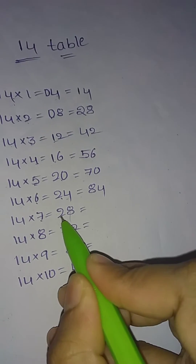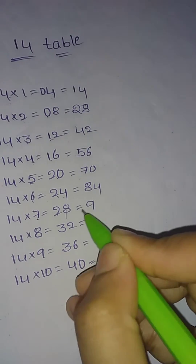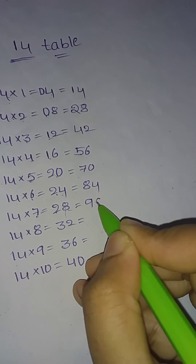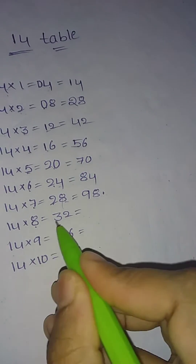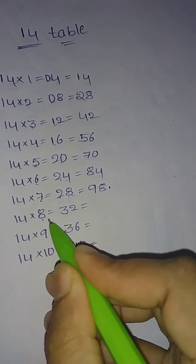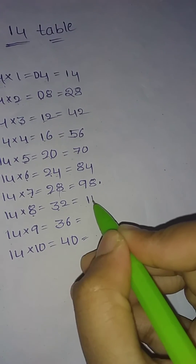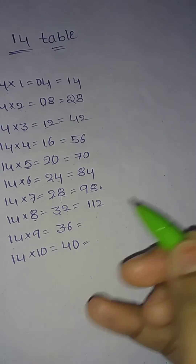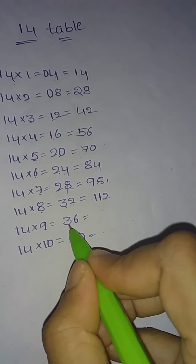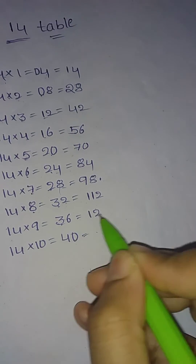Next, 7 plus 2 is 9, giving us 98. Then 8 plus 3 is 11, so we get 112. And 9 plus 3 is 12, giving us 126.